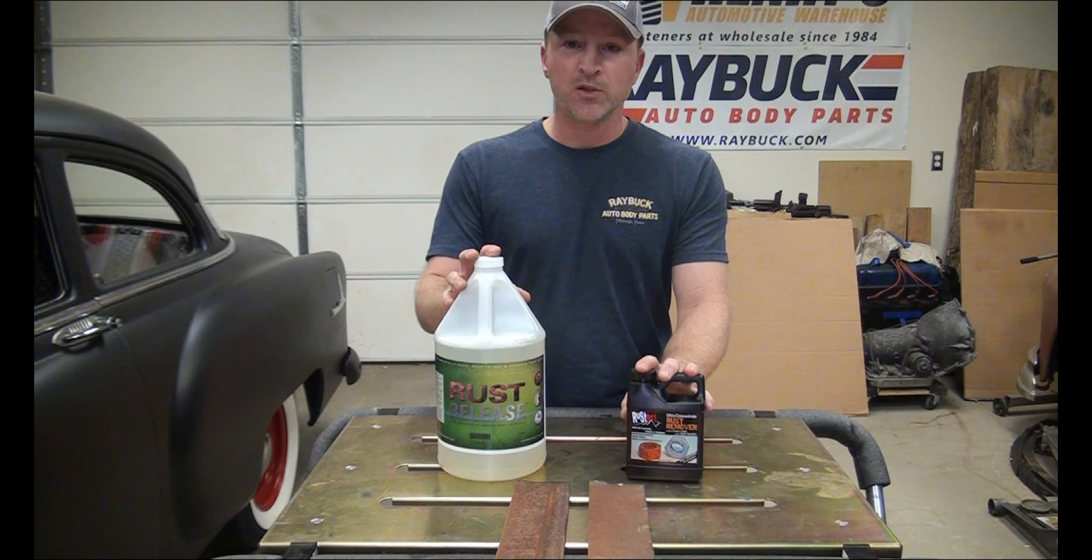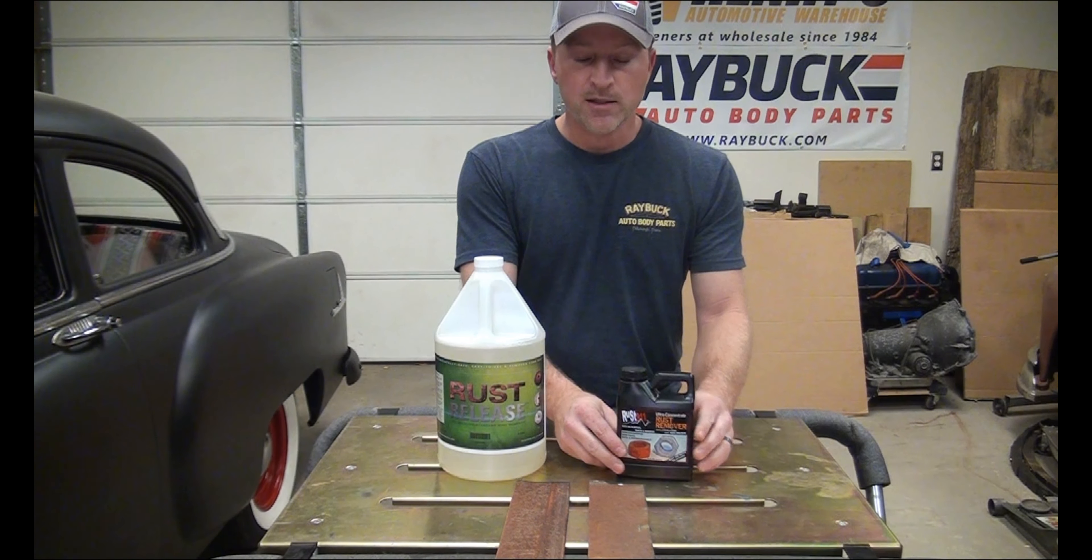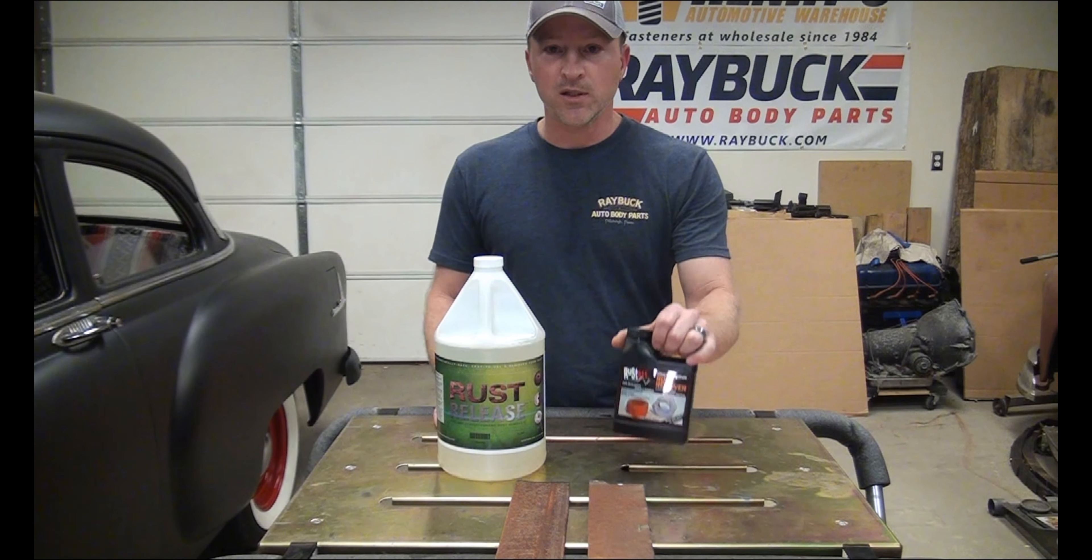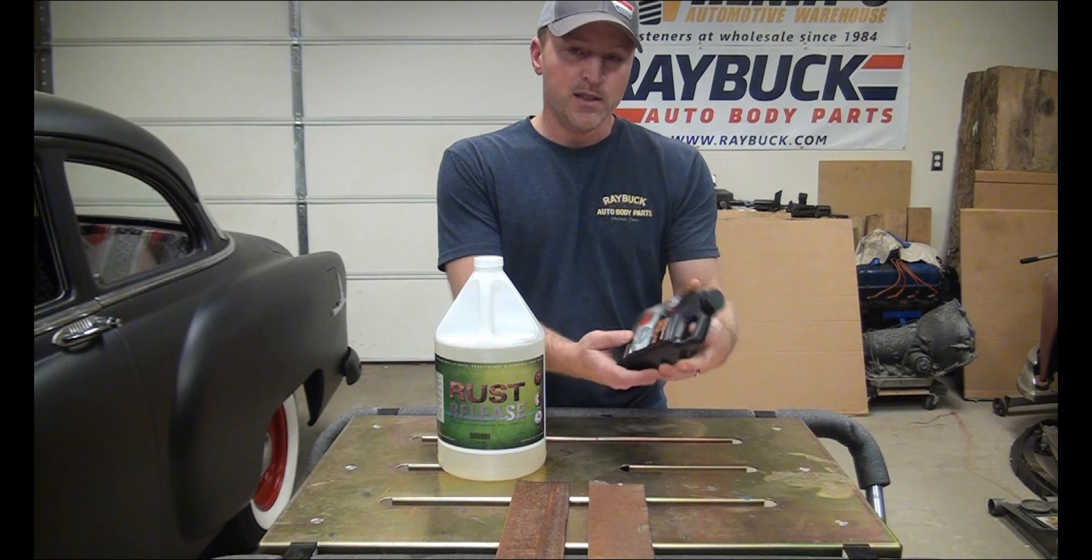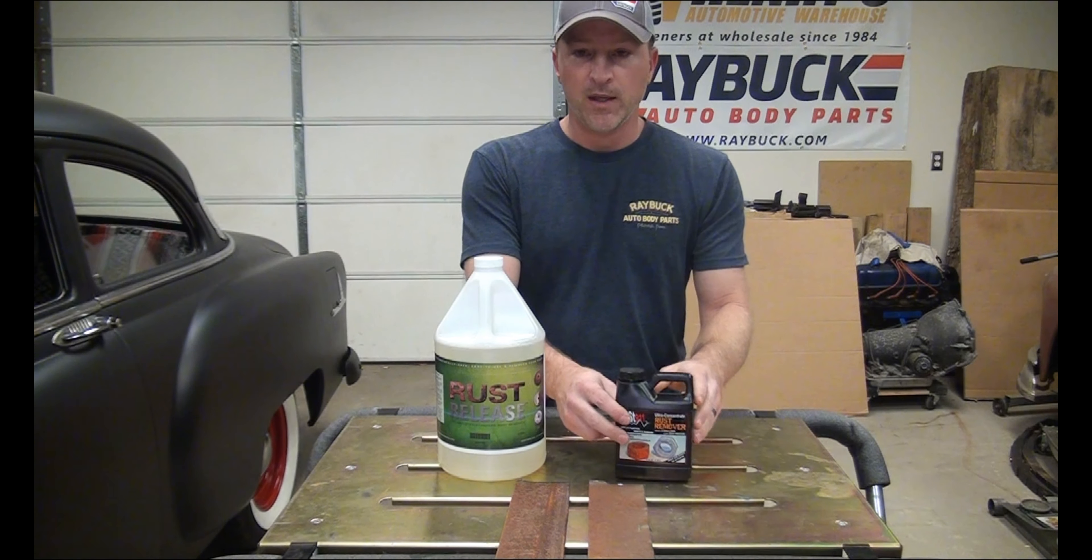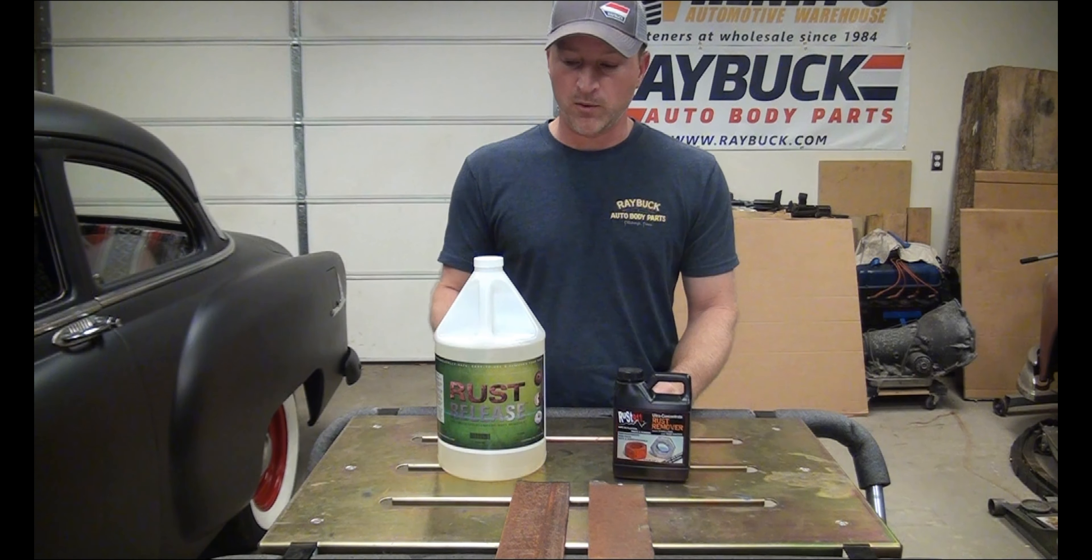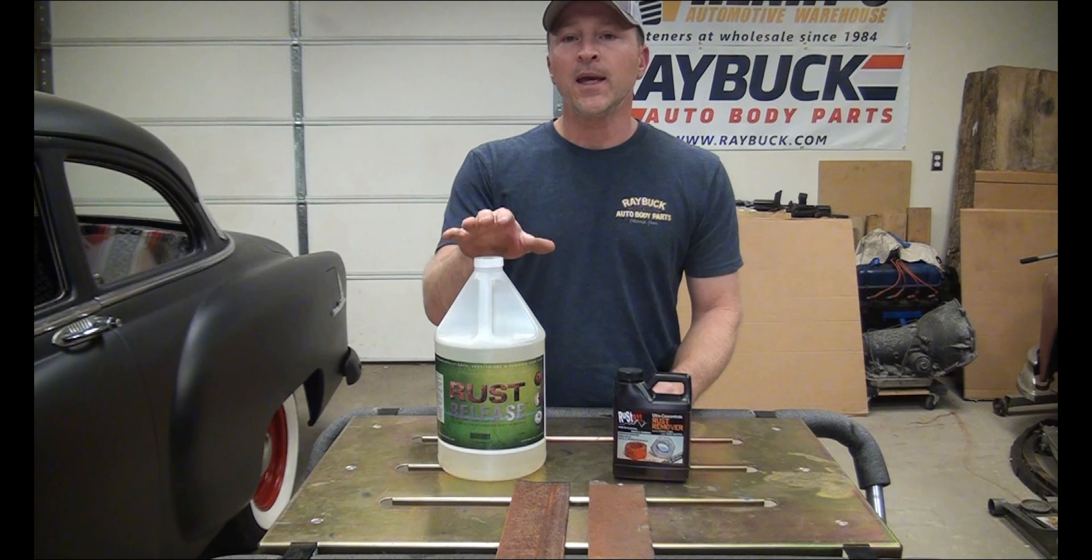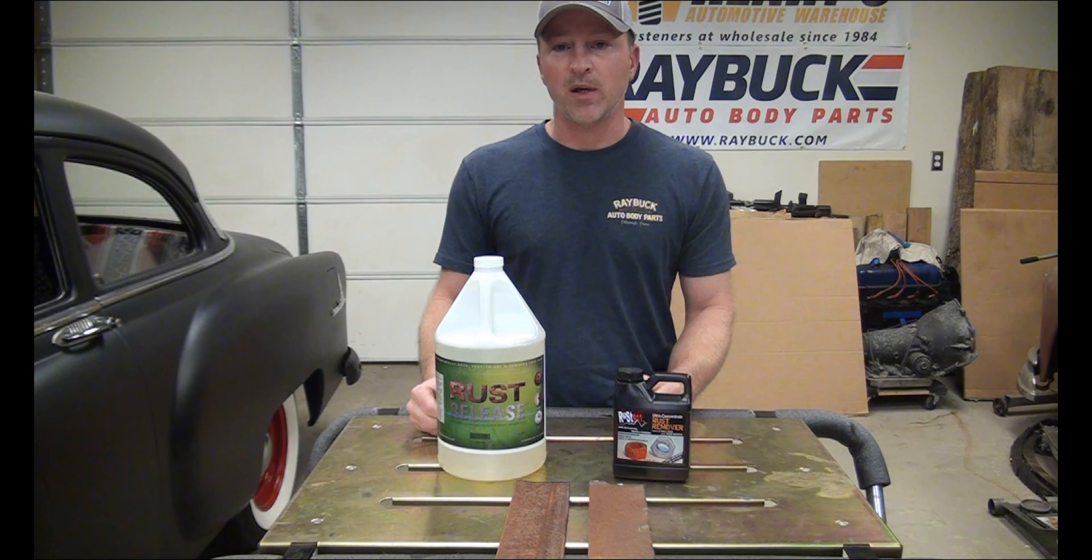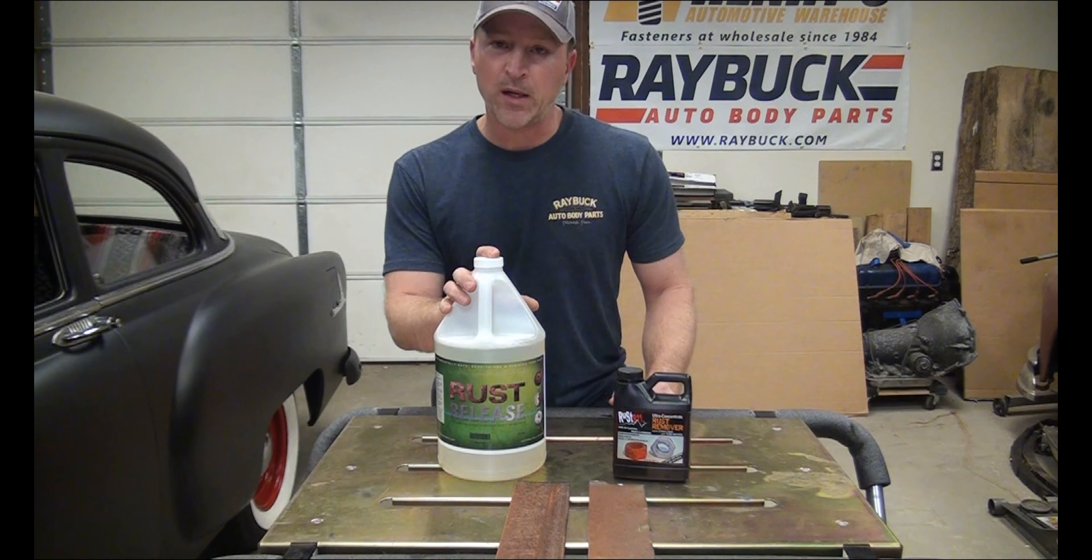One difference between the two: Rust 911 is in a much smaller container and is a concentrate, so you need to mix it with water. There are directions on the back. Essentially, this small 16-fluid-ounce container can make up to two gallons. I'm going to make a small mixture to soak our rusted metal. Rust Release and other products like Evapo-Rust and Metal Rescue come pre-mixed. I talked to the manufacturer about Rust Release potentially putting out a concentrate version.